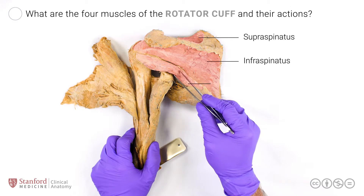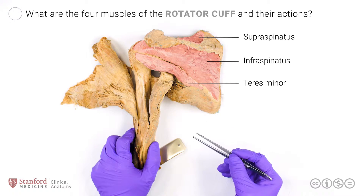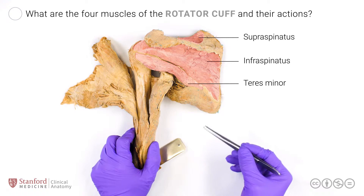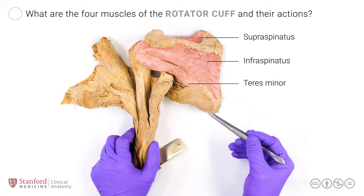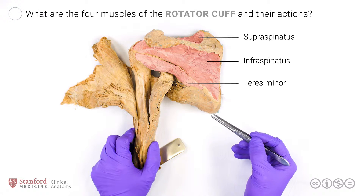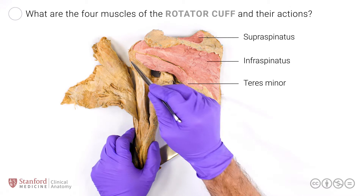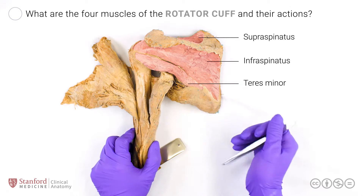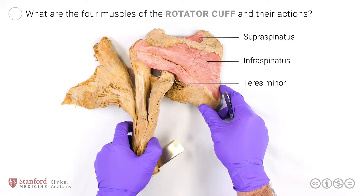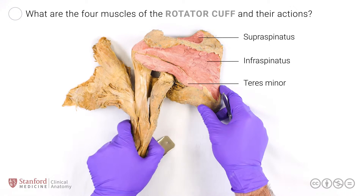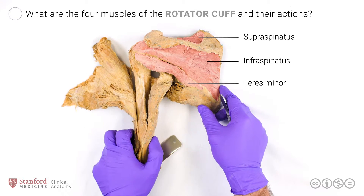And teres minor, which also runs from the inferior portion of the posterior scapula to the greater tuberosity and externally rotates the humerus.